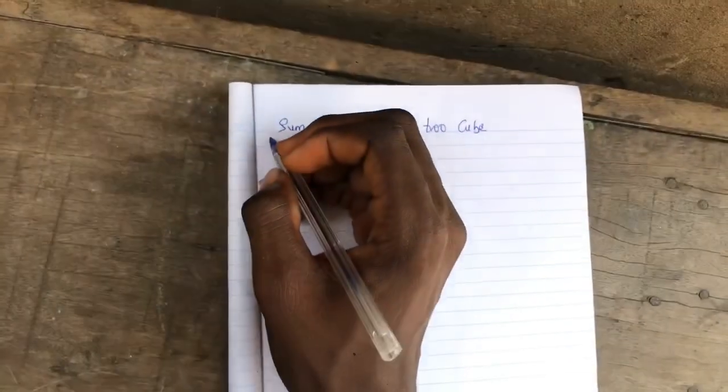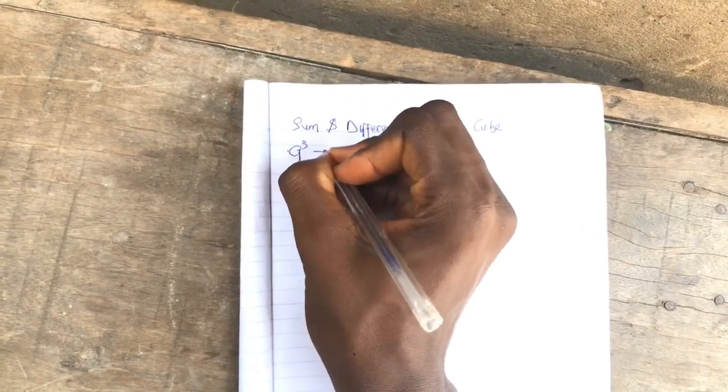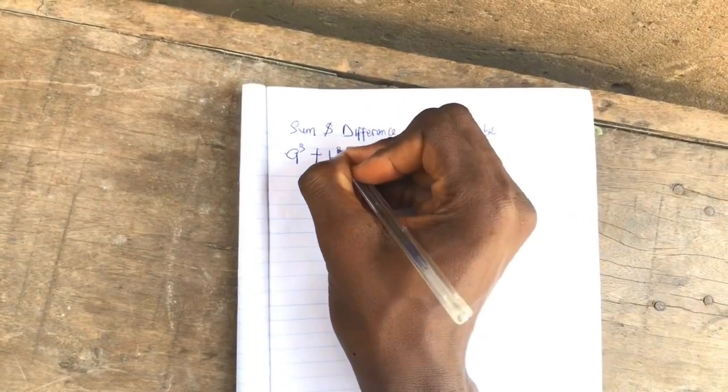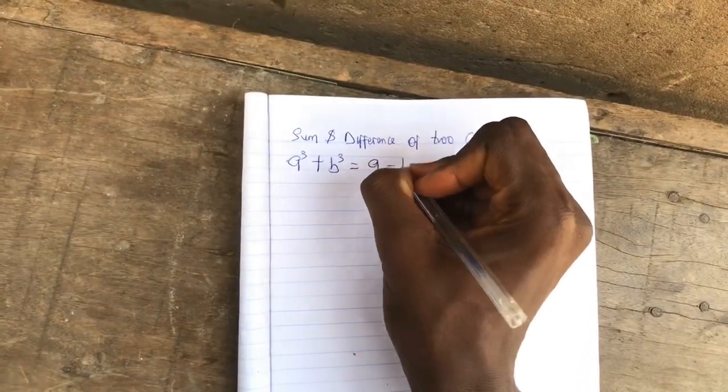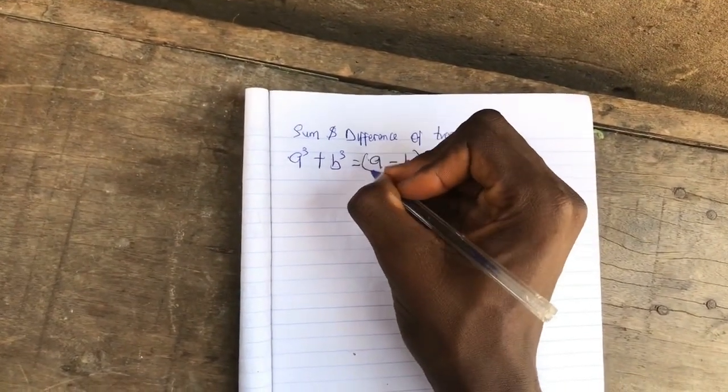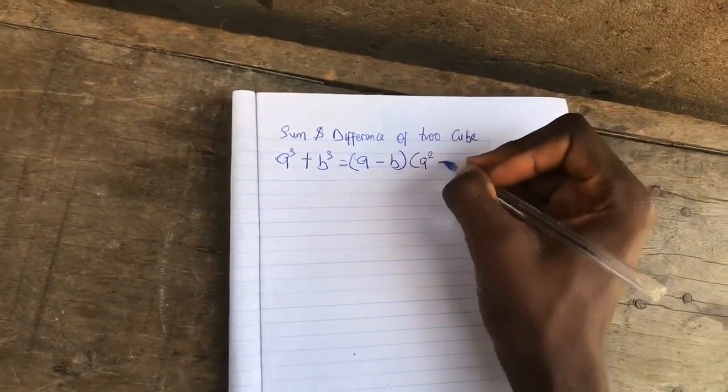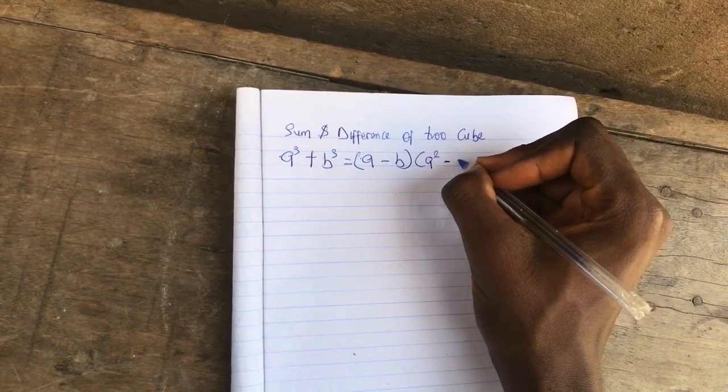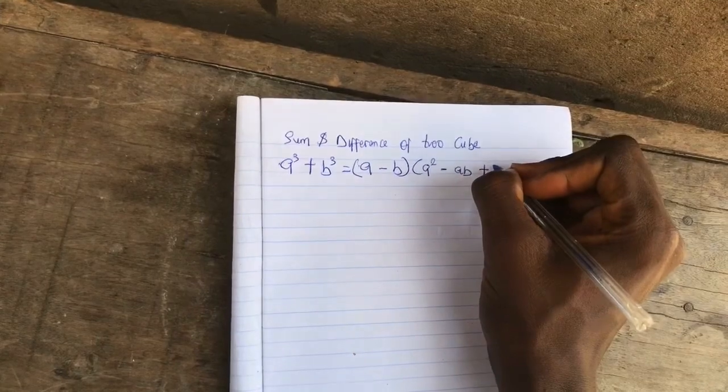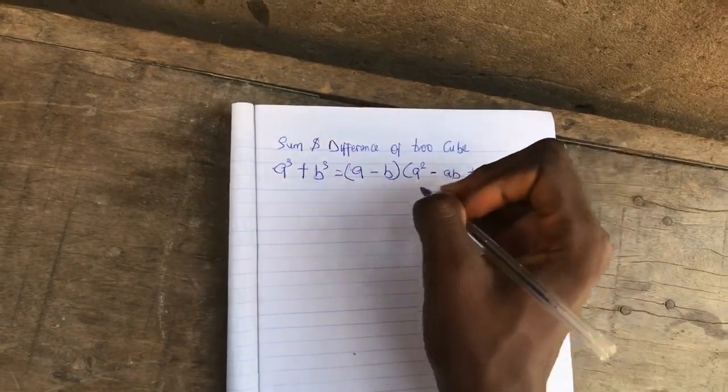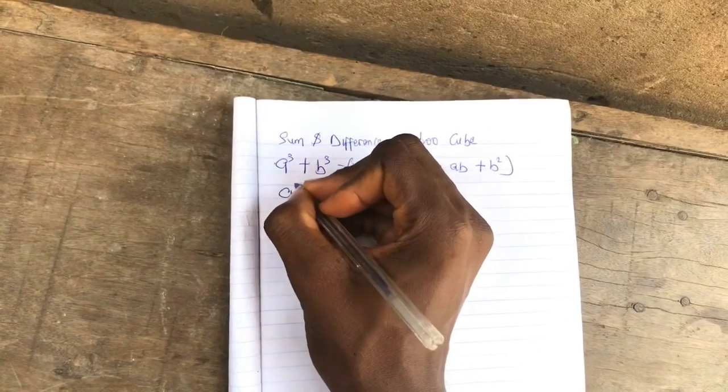When we are given a³ + b³, this is equal to (a + b) in bracket, then you open bracket a² minus ab plus b². These are the formulas for the sum.